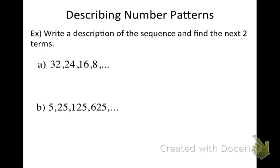Here's another sequence with a pattern that you can describe quite easily — and I actually have a couple ways of describing it. What you're probably going to notice first is that you can multiply each term by 5 to get the next term: 5 times 5 is 25, 25 times 5 is 125, 125 times 5 is 625. So we continually multiply by the same number. Sequences where you keep constantly subtracting, adding, or multiplying are going to be the focus of this chapter.